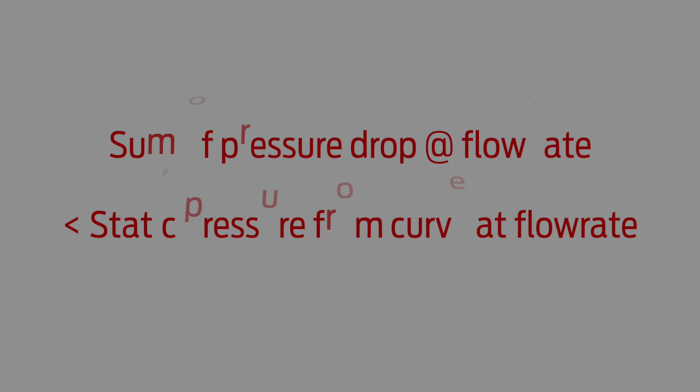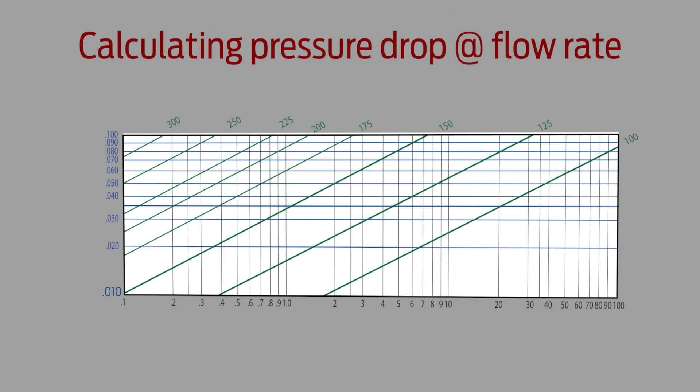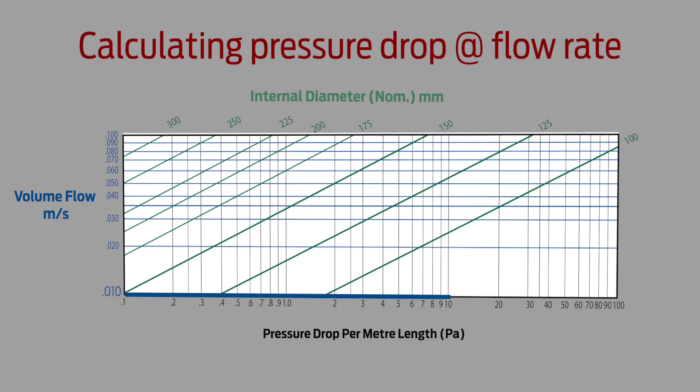The final formula is quite simple. Just sum the pressure drops of all the components at your desired flow rate and make sure it is less than the static pressure from the fan curve at that same flow rate. To understand how much pressure drop we are dealing with we can use plots like this. As you can see for a particular flow rate, in this case 10 litres per second, we can look up the pressure drop of a metre of duct based on its diameter.